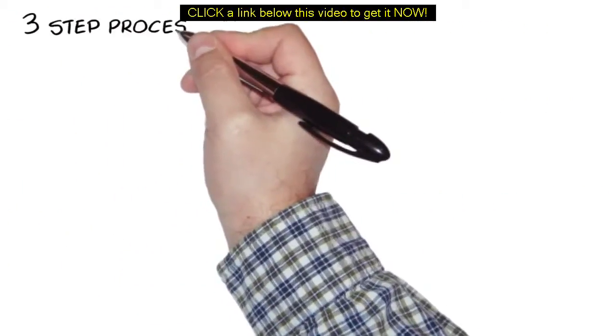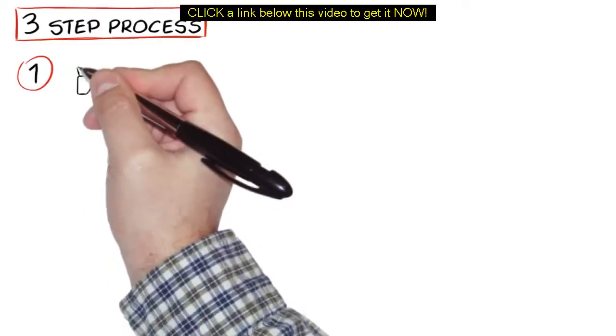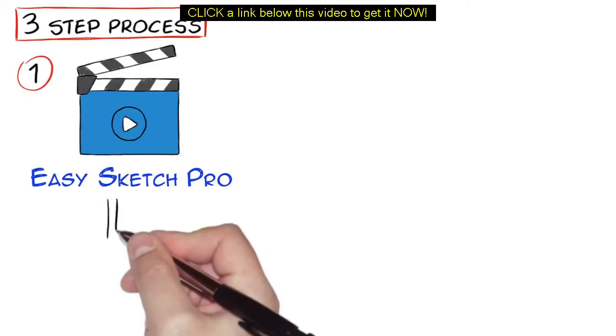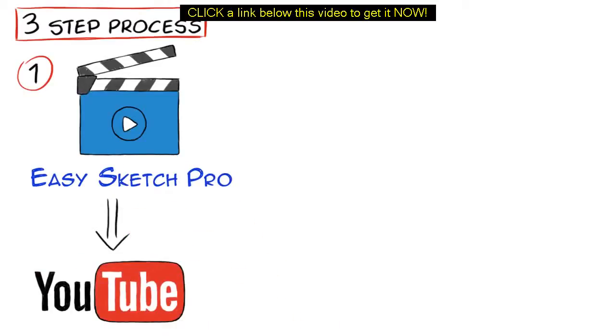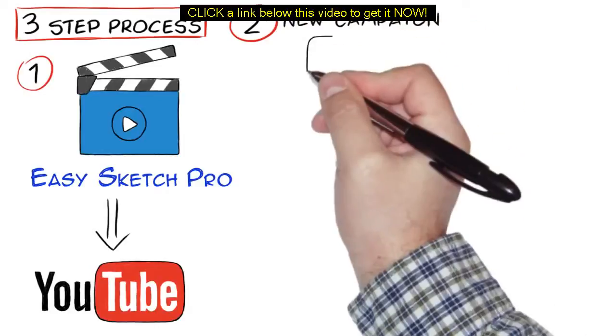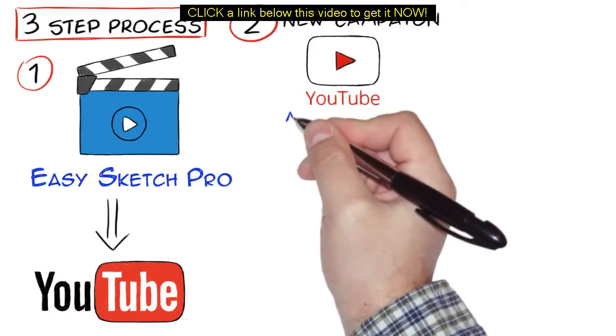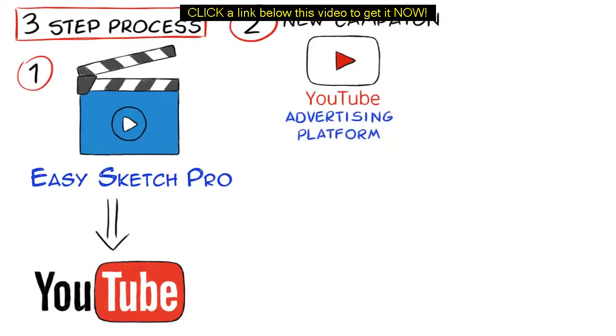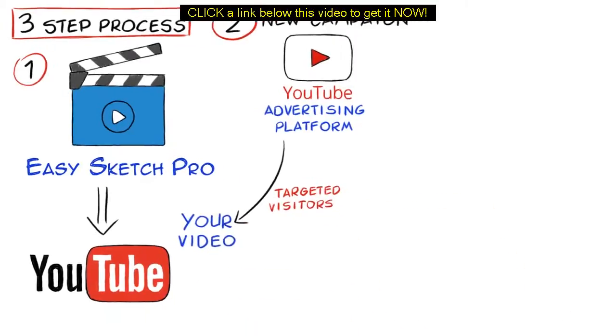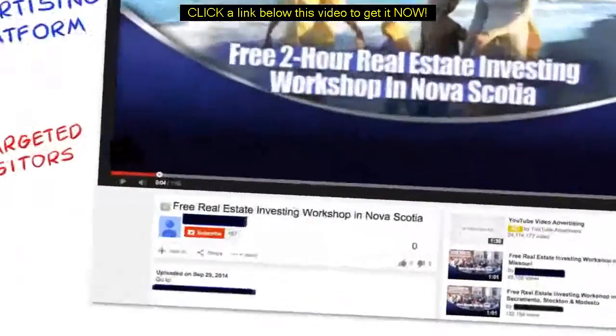It's a simple three-step process. One, just create an attention-holding video using EasySketch Pro or your favorite video software and upload it to YouTube with the link in the description and caption back to your website or your offer. Two, create a new campaign using YouTube video advertising platform and then super drive targeted visitors to your video on YouTube. And three, sit back.